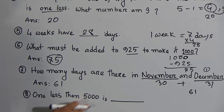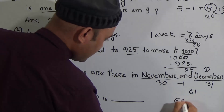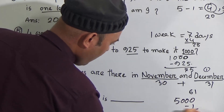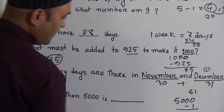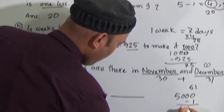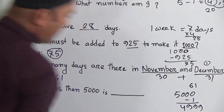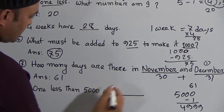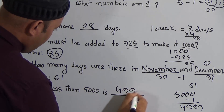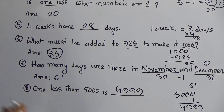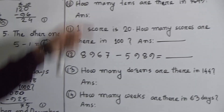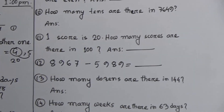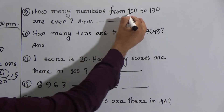Next: 1 less than 5,000. This is very easy. 1 less than 5,000 means 5,000 minus 1, which equals 4,999. The answer is 4,999.